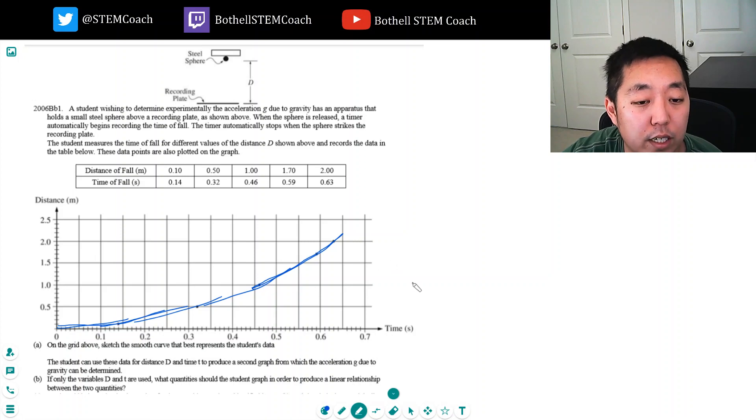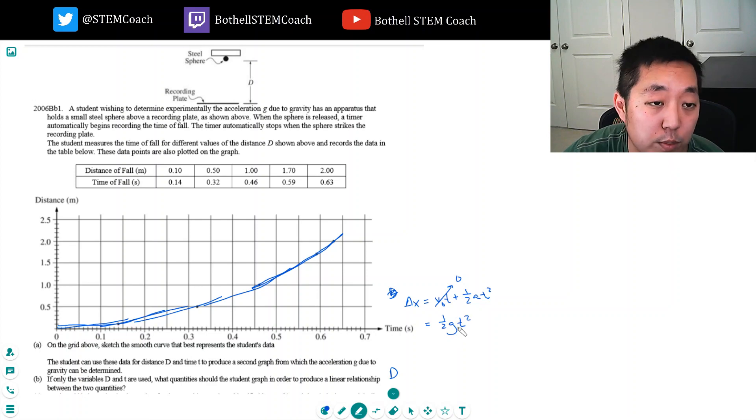If only the variables d and t are used, what quantity should be used to produce a linear relationship? So I want to look at the distance. Delta x, the time to fall, is equal to v naught t plus one half a t squared. This is my general equation. Because I'm just simply dropping a ball, I'm releasing it. Its initial velocity is zero.